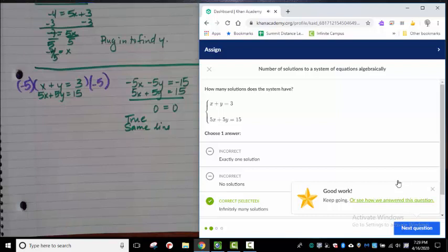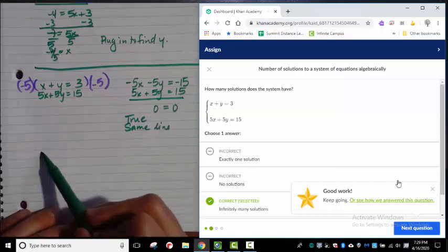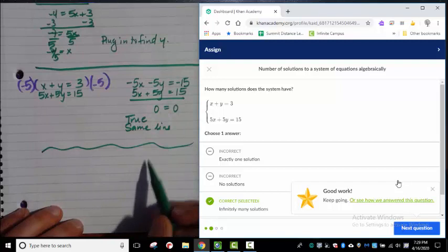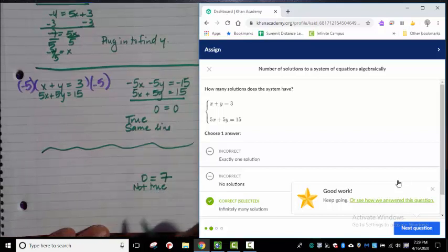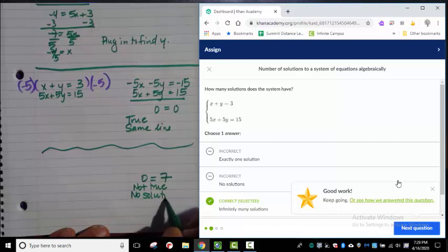Now, you can ask yourself, what if when I did this whole thing, I would have come down and gotten something like 0 equals 7. Right? That's not true. And that would have told us that this was no solution. What kind of lines would they have been? They would have been parallel lines.